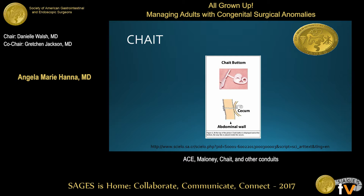For placement of artificial tubes when a conduit is not going to be made, the Chait button is a common example. It has a pigtail so it can be inserted through the abdominal wall into the cecum, and the pigtail keeps it in place while it sits flat on the abdominal wall. There are a variety of tubes that can be used in the cecum for this purpose.